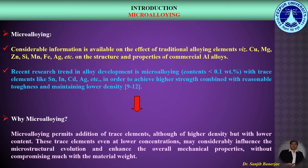Regarding microalloying, the recent trend in alloy development is microalloying, where content should be less than 0.1 weight percent with trace elements in order to achieve higher strength combined with reasonable toughness while maintaining lower density. The reason behind microalloying is that it permits addition of trace elements — although of higher density — but with lower content. These trace elements, even at lower concentrations, may considerably influence the microstructural evolution and enhance the overall mechanical properties without compromising the material weight.